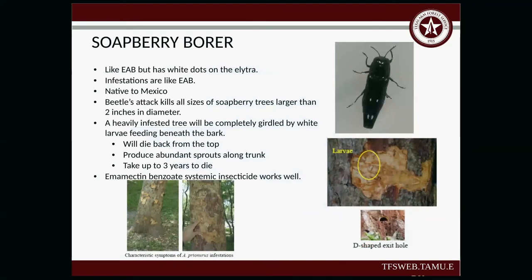Soapberry borer is similar to EAB but has white dots on its back. It's originally native to Mexico and attacks and kills all sizes of soapberry trees larger than two inches in diameter. Heavily infested trees will be completely girdled with white larvae feeding beneath the bark, making similar patterns to EAB but more straight-lined rather than zigzagged. You'll see dieback from the top and an abundant amount of sprouts from the trunk. It will take about three years to die. You want to use imidacloprid systemic insecticide. These also produce a D-shaped exit hole — not many beetles do that; most produce a circular exit hole.